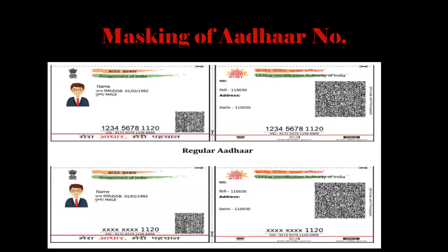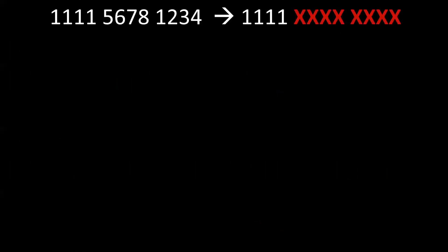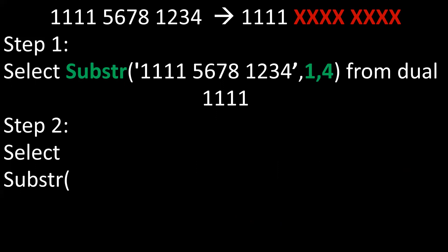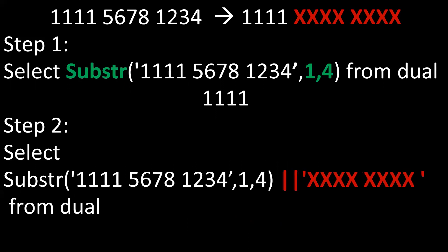Next, we'll see how to mask another number. We know that this number is a 12-digit character. We can display the first four or last four characters based on our requirement. To display the first four digits, we use substring(1, 4) to get the first four digits. Then by using the pipe symbol, we concatenate the rest of the string with 'X'.